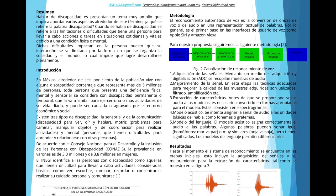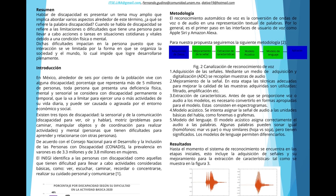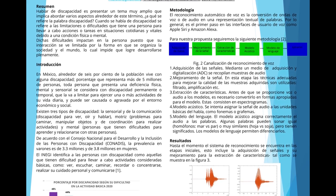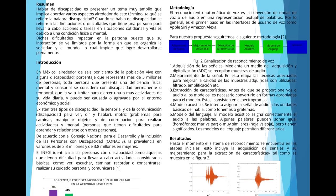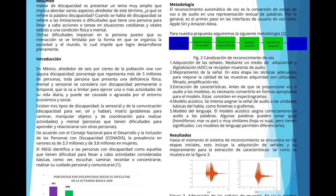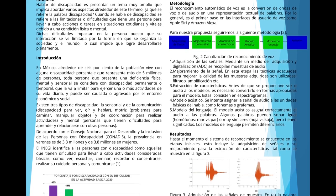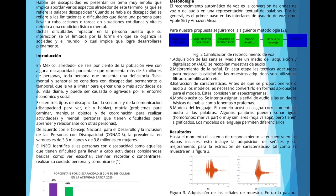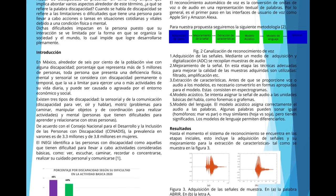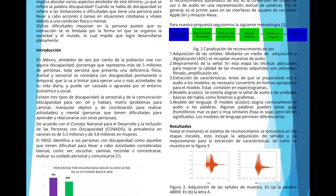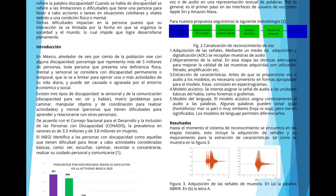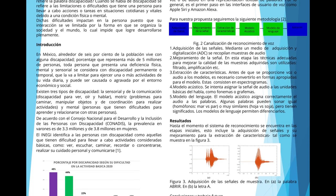Nuestra propuesta tiene cinco etapas. En la primera es la adquisición de señales, donde se recopilarán las muestras por medio de un sistema de adquisición de voz, es decir, micrófonos omnidireccionales. En la segunda etapa es el mejoramiento de la señal, donde se utilizarán técnicas adecuadas para mejorar la calidad de las muestras adquiridas, como por ejemplo el filtrado o la amplificación.